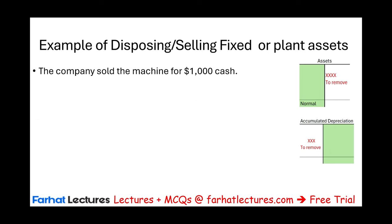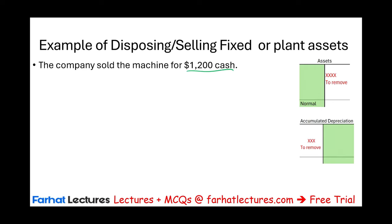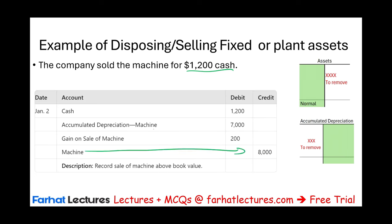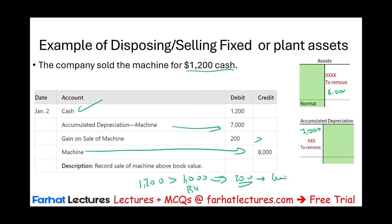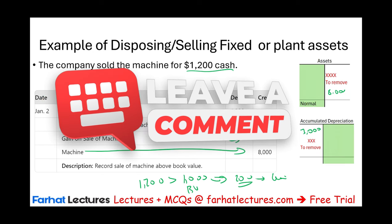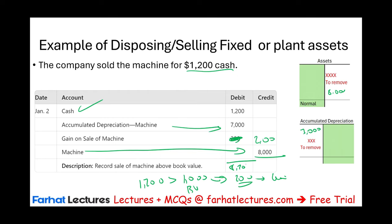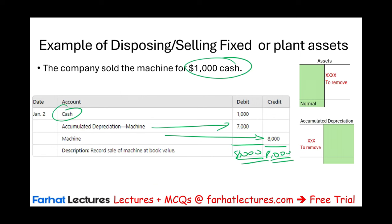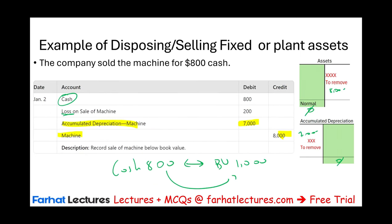Scenario 3: we sold the machine for $1,200. We credit the machine $8,000 and debit its accumulated depreciation $7,000. Cash received is $1,200 — that is $200 greater than the book value of $1,000, therefore we have a gain of $200. The gain is recorded as a credit of $200. Make sure total debits of $8,200 equal total credits of $8,200.